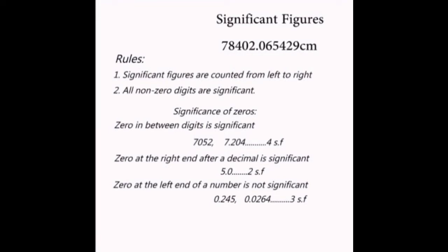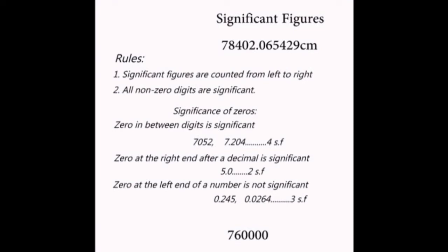Now, this is where the problem comes. If a zero occurs at the right end of an integer, it may or may not be significant. For example, the number 760,000 could be correct to two, three, four, five, or six significant figures.